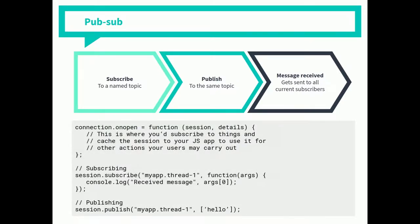Here's some JavaScript code showing how we do this on the user side in their browser. We have connection on open — like a lot of things in JavaScript, you've got callbacks. When your connection is established, you can start subscribing and publishing. We subscribe to 'MyAppThread1' and when we get a message we log it to the console, assuming our users have the console open at all times. We can also publish to the same topic. The array we're publishing can contain anything — a string, objects serialized as JSON. It's quite flexible.